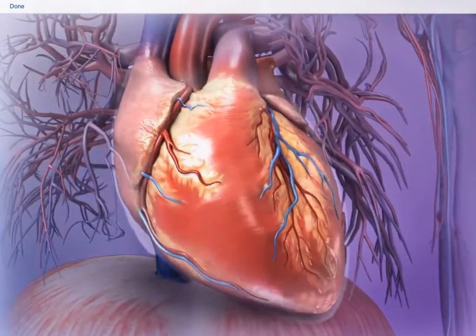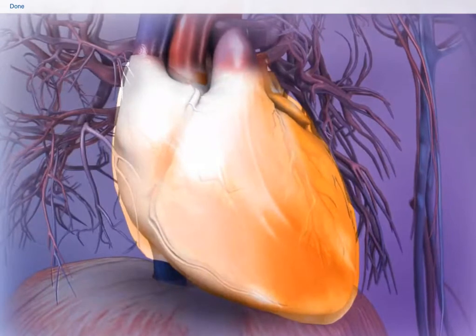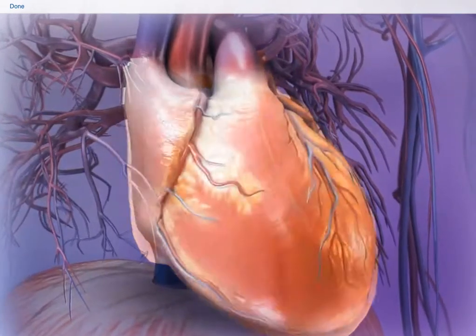Within the thoracic cavity, there is a thin sac known as the pericardium that encloses and protects the heart.